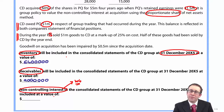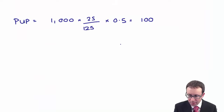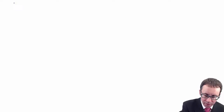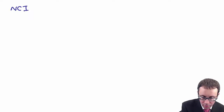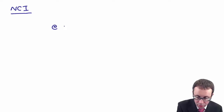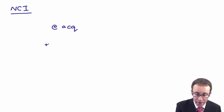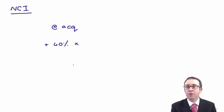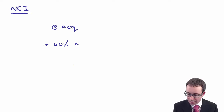Those two parts — inventory and receivables — were reasonably straightforward. The last part is a challenge: working out the non-controlling interest. So we look at the non-controlling interest at the date of acquisition, and then add the NCI share — 40% — of the post-acquisition profits.